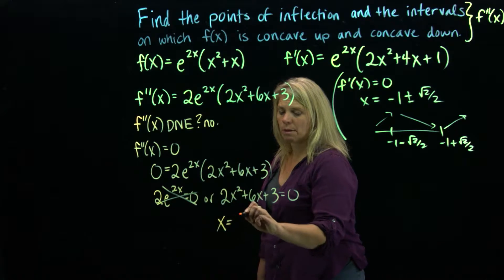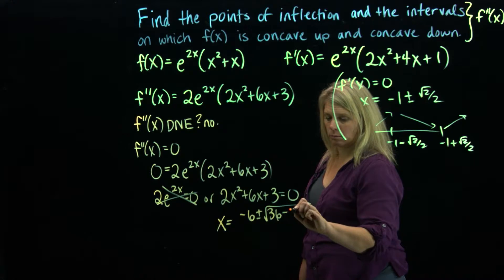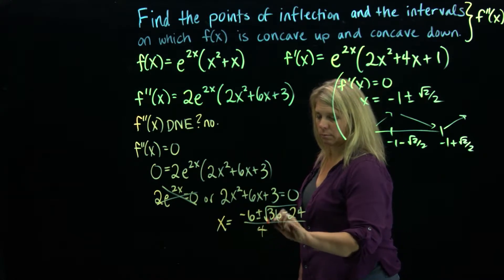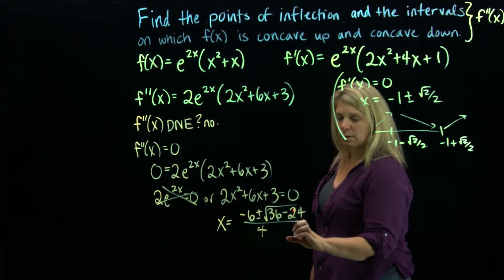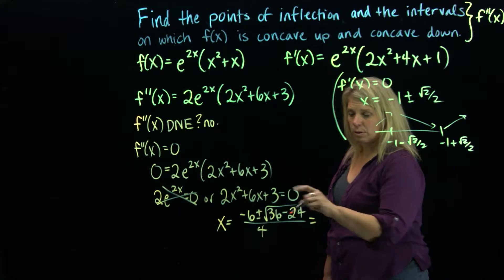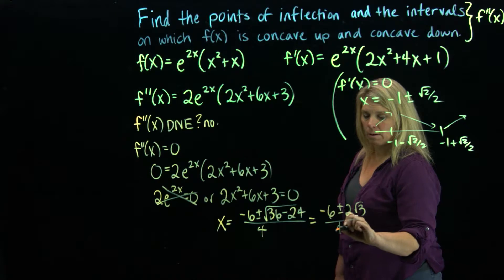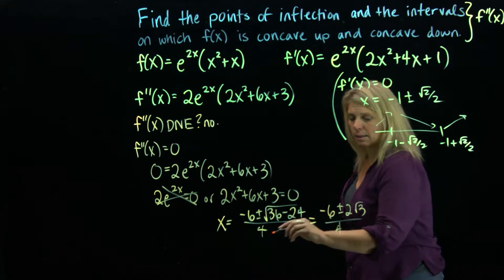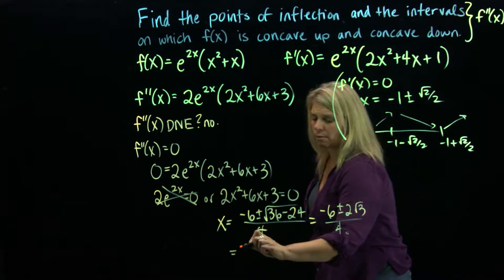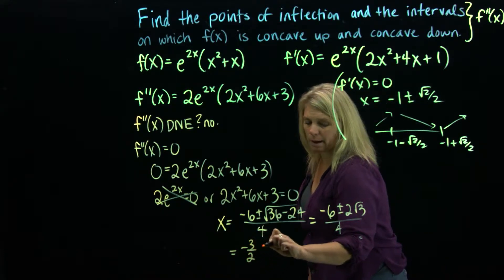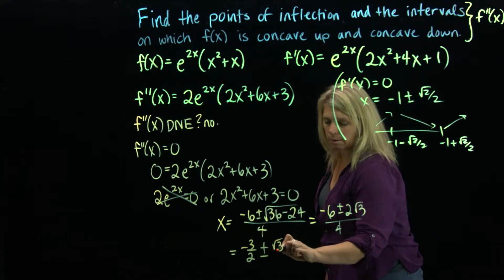Using the quadratic formula on 2x squared plus 6x plus 3: the discriminant gives 36 minus 24, which is 12. The square root of 12 simplifies to 2 square root of 3. Simplifying further by separating the fractions, I get negative 6 over 4, which is negative 3 halves, plus or minus 2 square root of 3 over 4, which reduces to square root of 3 over 2.